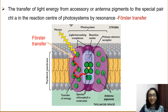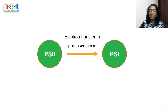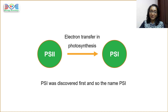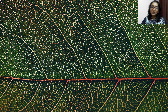So that's all about photosystems. But before concluding this lecture, let me tell you an interesting fact. Did you know that the direction of electron transfer in photosynthesis is from PS2 to PS1? You may be wondering why the first photosystem where photosynthesis is initiated is called PS2 and the later participant as PS1. There is a simple reason — PS1 was discovered first and so the name PS1. If you find this video helpful, hit the like button, and don't forget to subscribe to this channel for more biology videos.